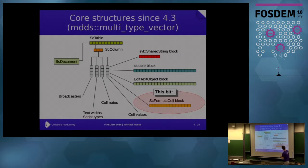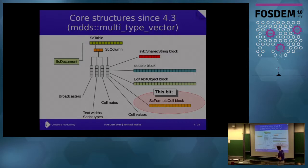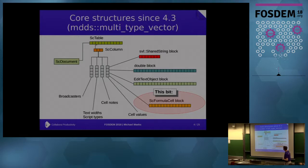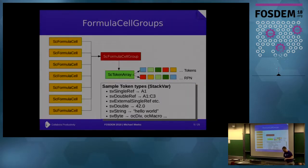Since LibreOffice 4.3, the data structures have looked like this: you have a document - your spreadsheet - inside which you have a series of sheets called tables, several tabs along the bottom. Then we have columnar columns, stored as a fixed-size array of columns, with multi-dimensional data structures that are spans of contiguous types in chunks going down. Things like blocks of strings or chunks of doubles, but we'll be looking at the formula cell stuff today.